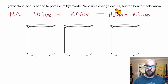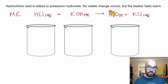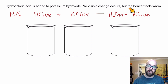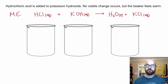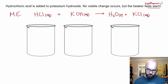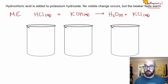Notice I put an L for liquid for water, not aqueous. Liquid means that's the solvent — we just produce more of the solvent. Aqueous means we have ions like potassium and chloride dissolved in our solvent of water. The reaction is also exothermic, meaning the beaker feels warm.